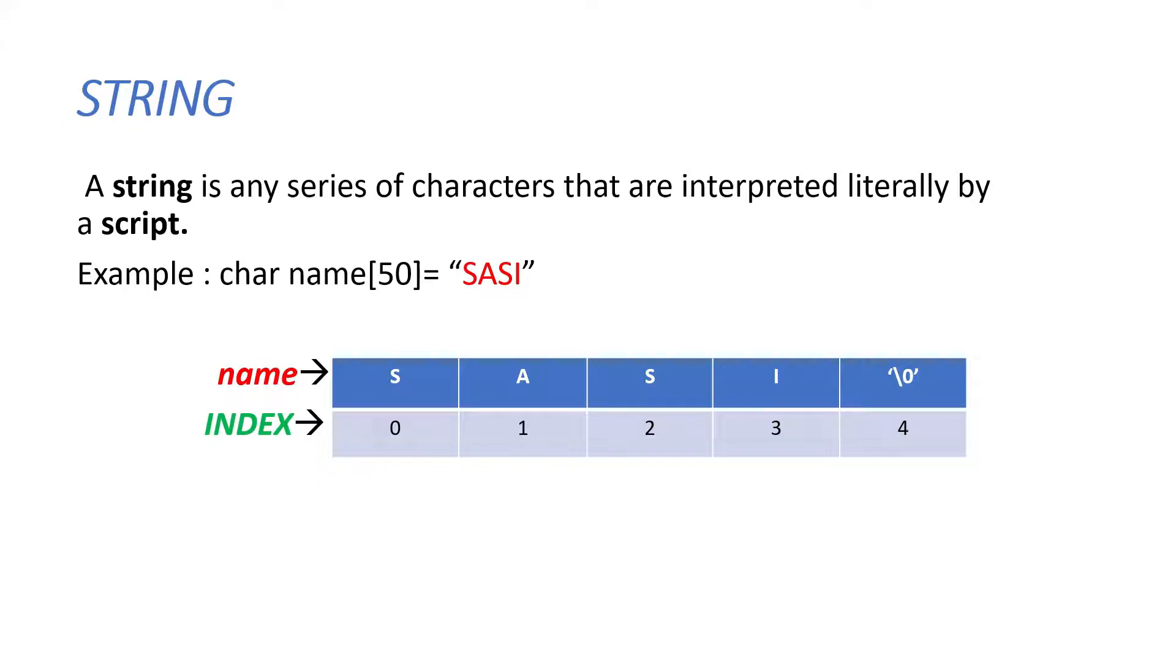Whereas the null character, that is backslash 0, is stored by default at the end of the character array. Here it is containing 4 characters: S, A, S, I. So we can conclude that the length of the string is 4.